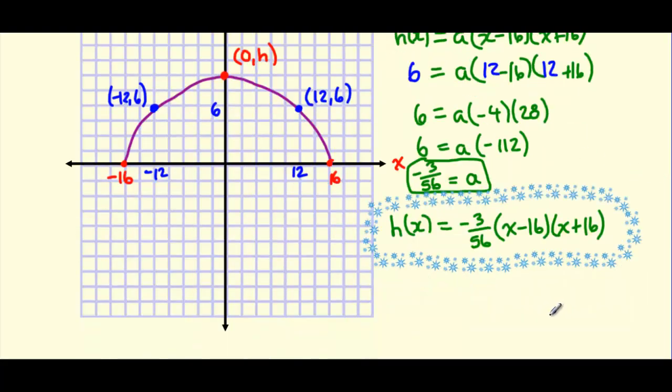The last part of our question asked us to solve for what the height would be at the vertex. So we know that the height, or the vertex, happens when x equals 0. Remember, this is the point 0 here. So we can use our function here. What is the height when x is 0, so h(0)?